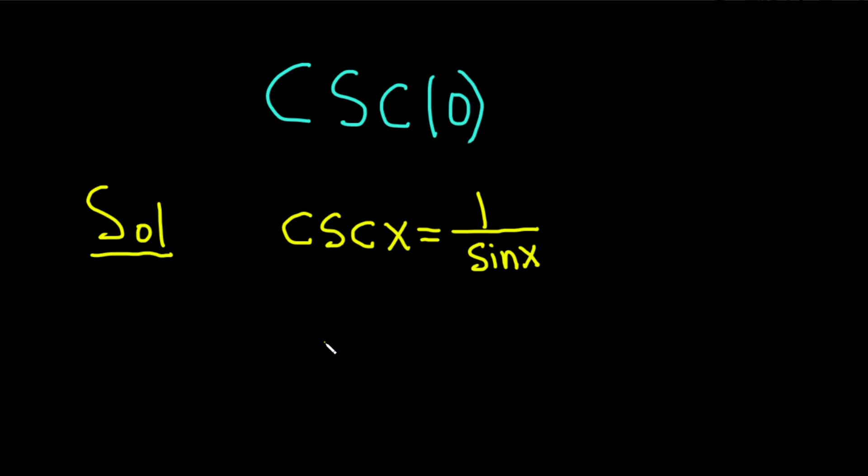So in our problem, we have a 0. So this is cosecant of 0, and that's equal to 1 over sine 0. All we've done here is replaced the x with the number 0.